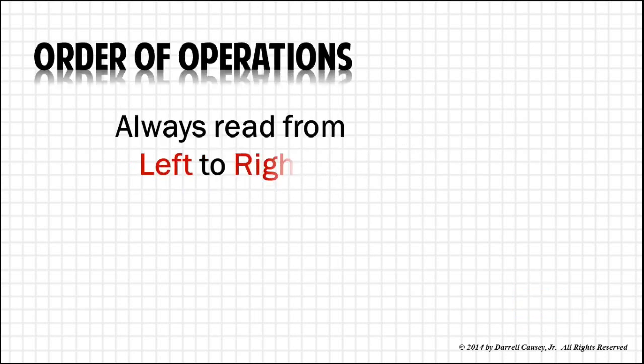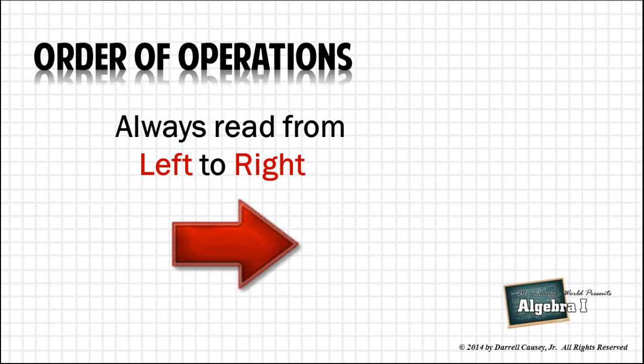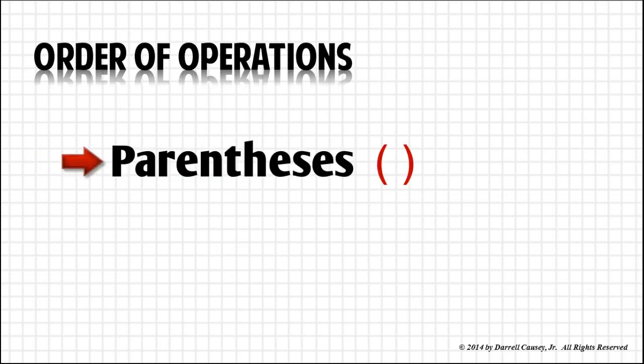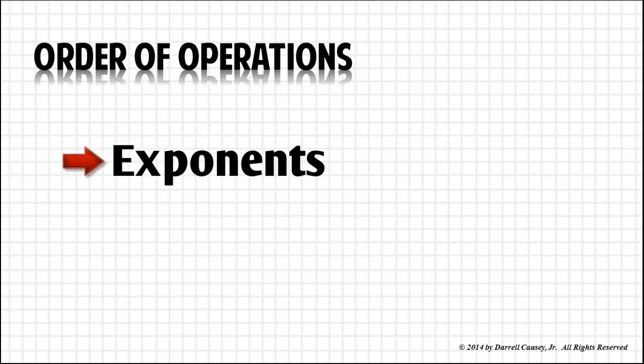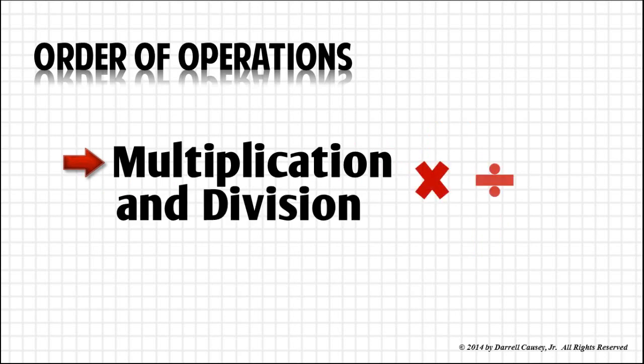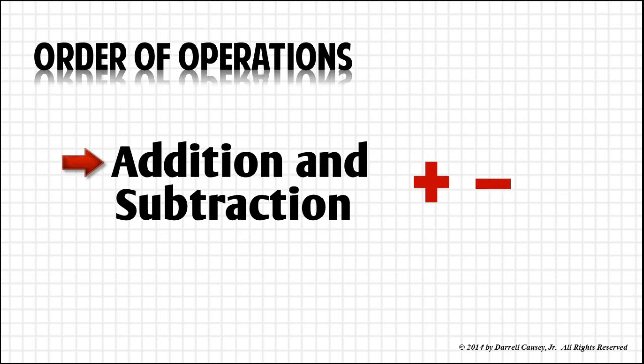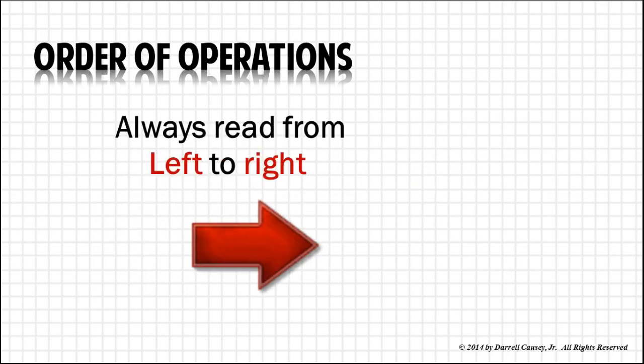The first thing you need to remember in the Order of Operations is that you always read from left to right. If you're not sure what to do, read left to right. Then the first thing you do is do the parentheses or any other kind of symbol of inclusion such as brackets or braces. Know your exponents and do your exponents next. So first parentheses then exponents or anything else to any other power. Then do your multiplication division from left to right and your addition and subtraction left to right. Always remember to read from left to right.